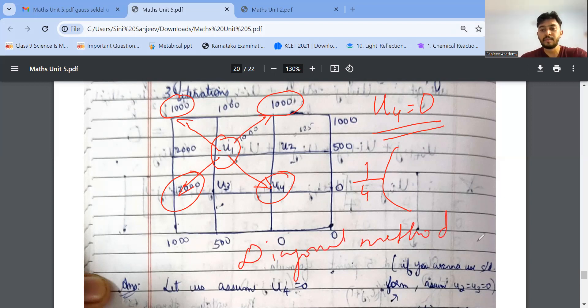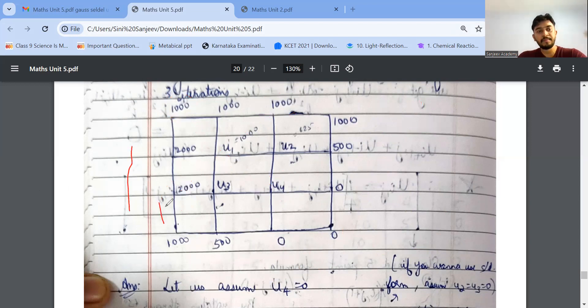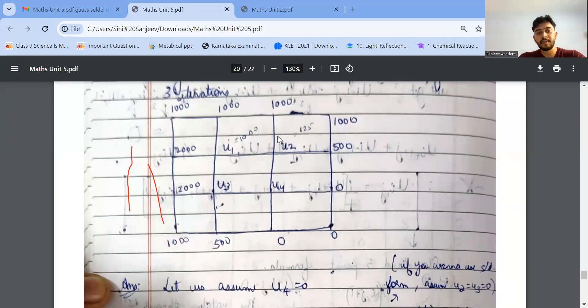So I think you are clear with this. I'll just show you what has been done here. Yes, so this is our first one, U1 is equal to 1 by 4 into whatever I told you, diagonal form, and I'll be getting one value. U4, I'll assume it as 0.